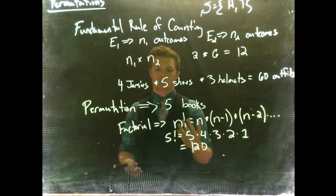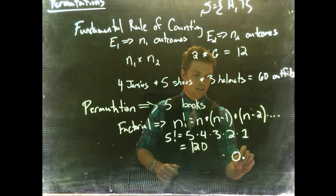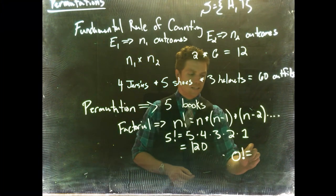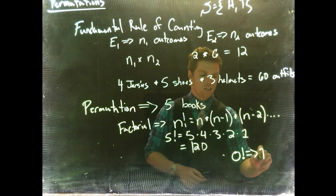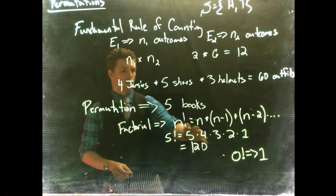Now with our factorials, just as a note, by definition, if you ever get to zero factorial, which we will in a little bit, but if you get to zero factorial, it doesn't equal zero. By definition, it equals one. So just remember that, it's kind of like one little quirk.